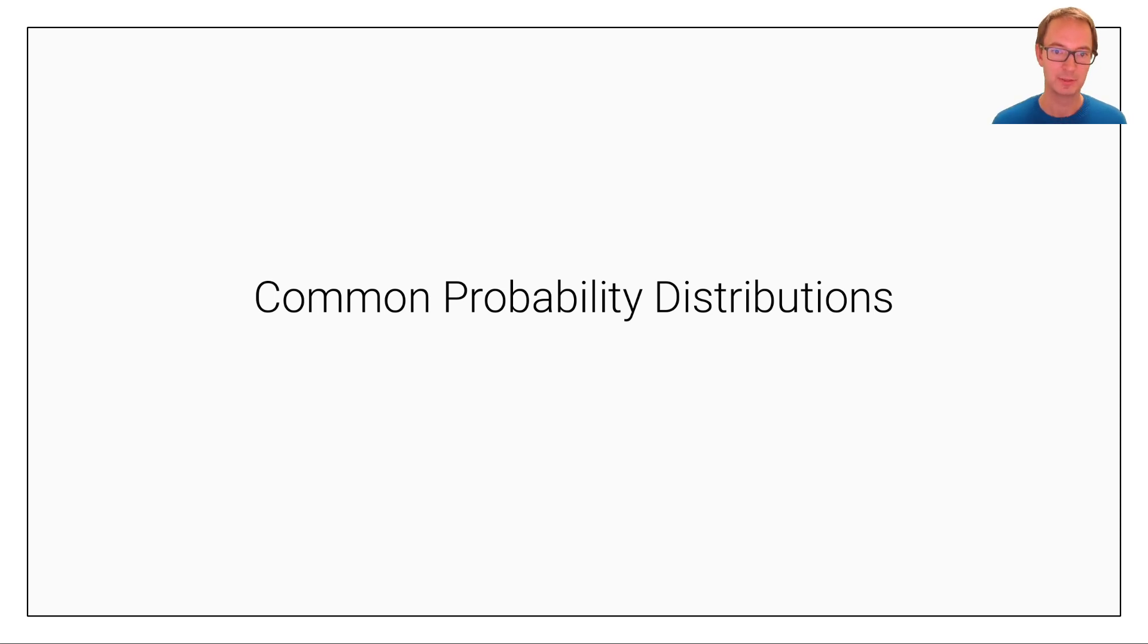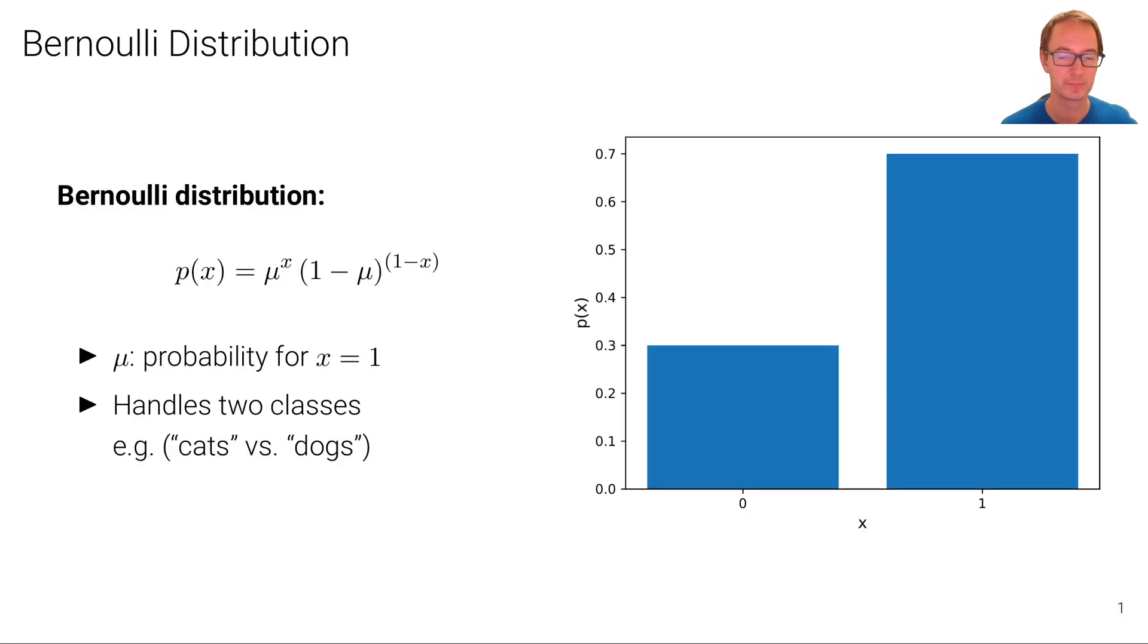Let's now look at some common parametric probability distributions that are often used. A very common one is the Bernoulli distribution that handles the case of two categories. For example, if you want to classify cats versus dogs in an image classification task. It's simply defined as p of x equals mu to the power of x times 1 minus mu to the power of 1 minus x. Where x is either 0 or 1 depending on the class, and mu is the probability for x equals 1.